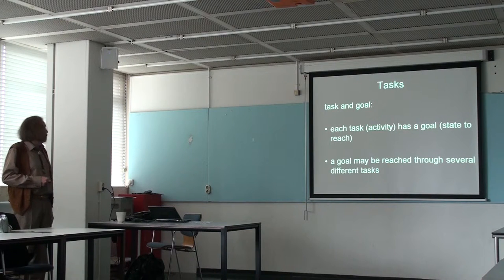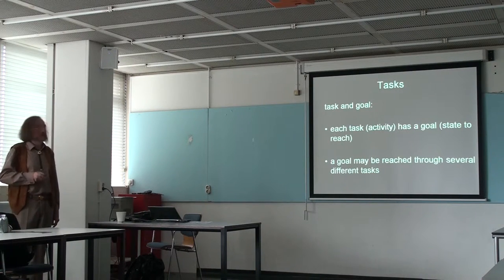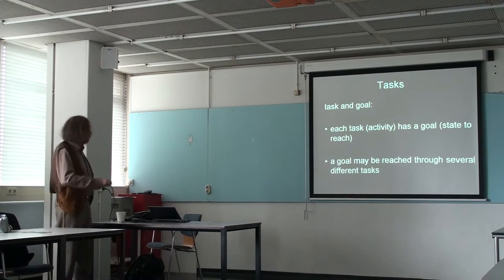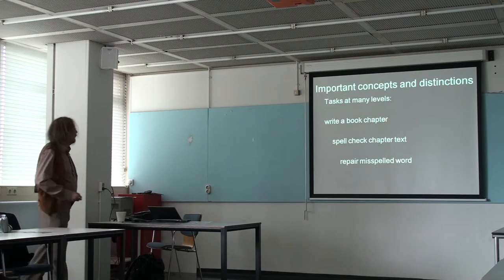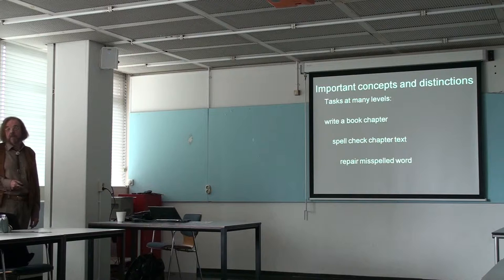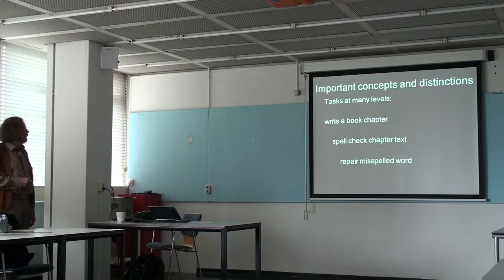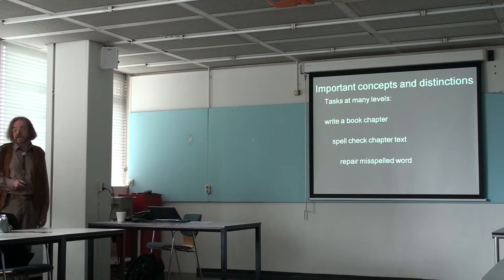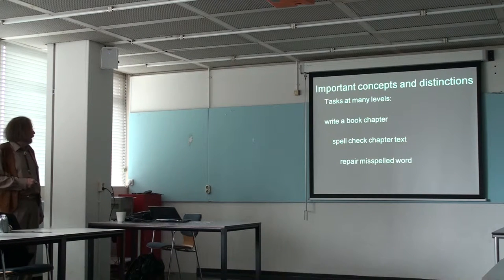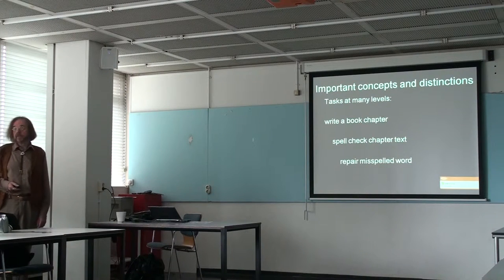The goal may be reached through several different tasks. Normally a task has a single goal — a state — but there are different ways to reach that. Tasks can be at many different levels. For instance, I can have the task to write a book chapter, which will take me maybe a month or two months. In order to do that, I do many things, including checking the spelling. And to check the spelling is something that could take me half a day for a chapter. One of the things is to repair one misspelled word.